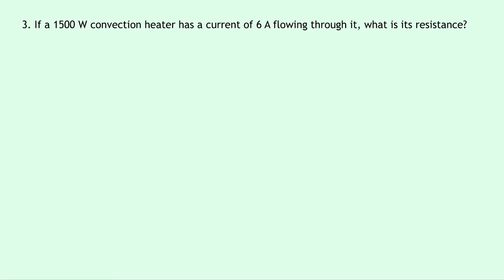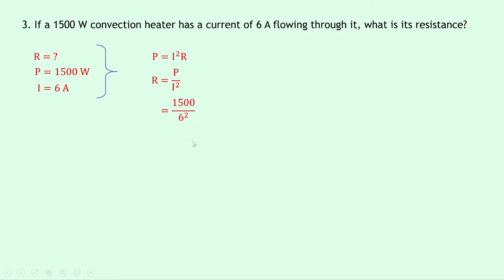Lastly, question three says that if a 1500 watt convection heater has a current of 6 amps flowing through it, what is its resistance? We're trying to find resistance R. The power P is 1500 watts and the current I is 6 amps. Our equation is P = I²R. Rearranging for R by dividing both sides by I² gives R = P/I². Substituting gives 1500 divided by 6², and putting that into your calculator gives an answer of 42 ohms.